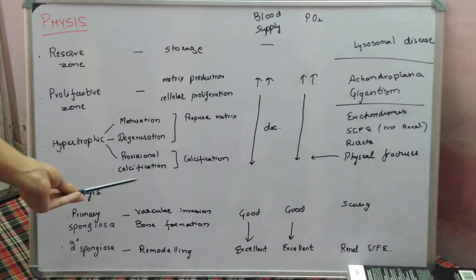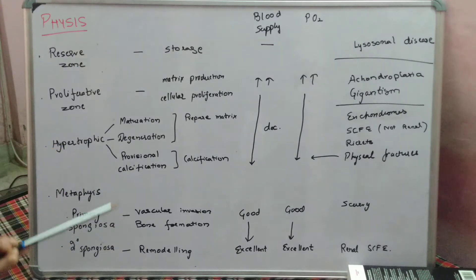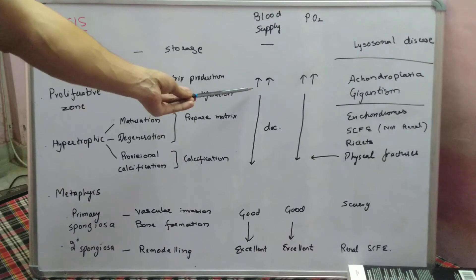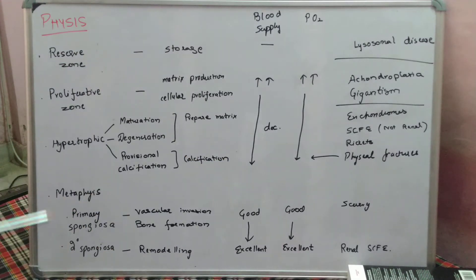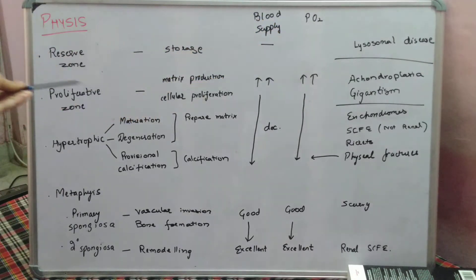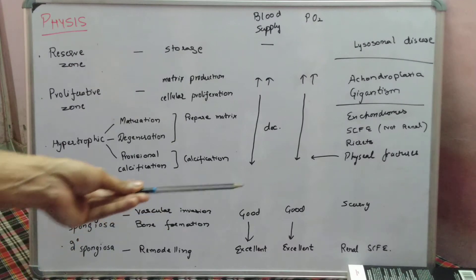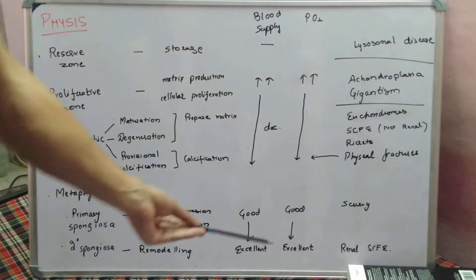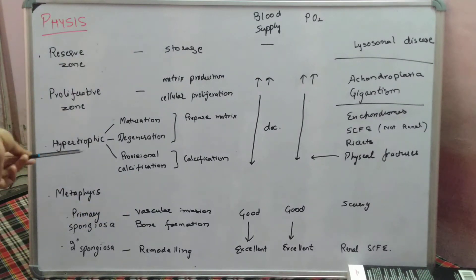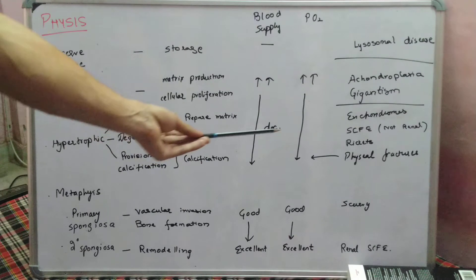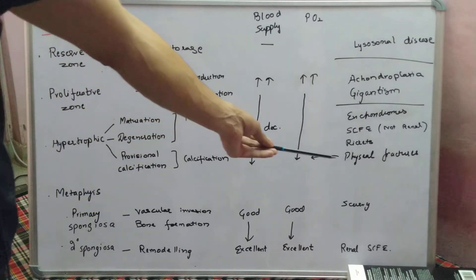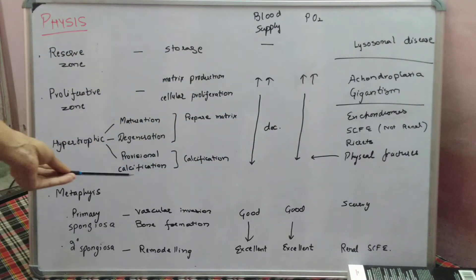Calcification of the matrix occurs in the provisional calcification zone. From the proliferative zone to the calcification zone, blood supply and oxygen tension sequentially decrease. Regarding clinical disorders: the reserve zone is affected by lysosomal diseases like Gaucher's disease. The proliferative zone is under the influence of growth hormone, so achondroplasia or gigantism occurs here. In the hypertrophic zone, enchondroma, SCFE, and rickets are associated — rickets being a disease of calcification. Physeal fractures also occur in the hypertrophic zone because it is the weakest zone.